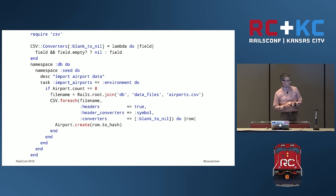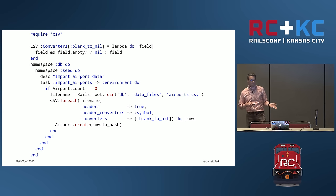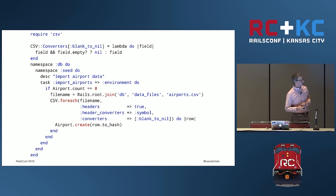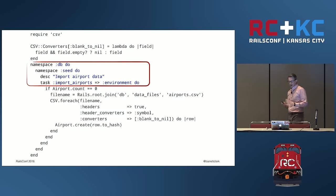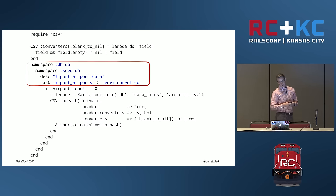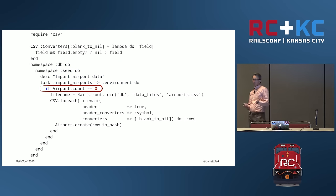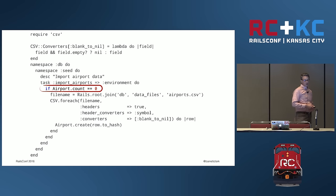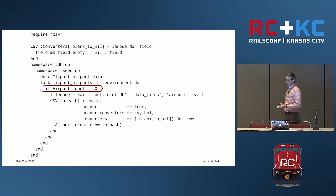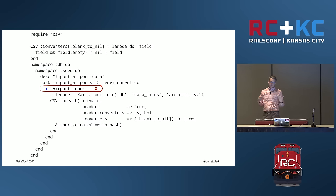We can also create a custom rake task. This one's going to take a CSV file and load it in. The CSV file has a header row that happens to match the fields in the table. There's a custom converter so any field that is blank — empty string — will be converted to null that the database understands. The rake task is in the `db:seed` namespace, so that's how you get `db:seed:import_airports`. It's going to load the Rails environment. We'll check if there are any airports already loaded — if there are any records, we assume the task has already run. We don't want 8,000 lookups doing `first_or_create`.